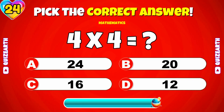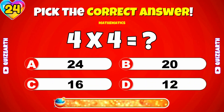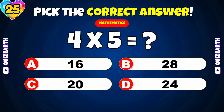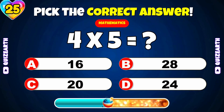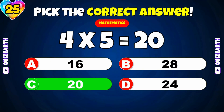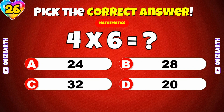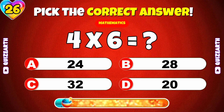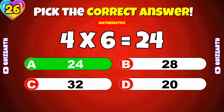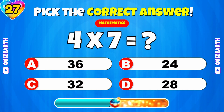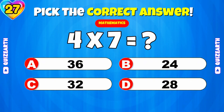What is 4 times 4? 16. What is 4 times 5? 20. What is 4 times 6? 24. What is 4 times 7? 28.